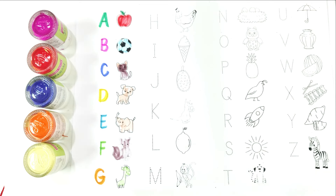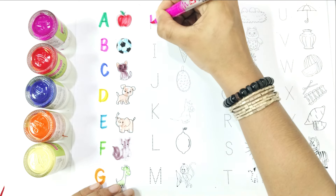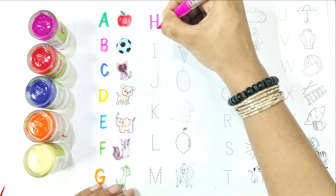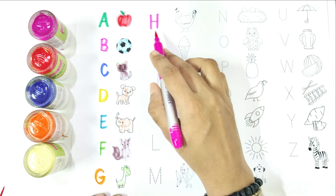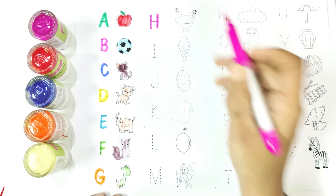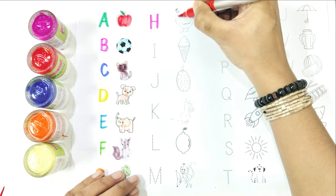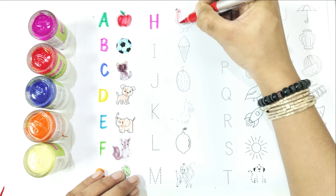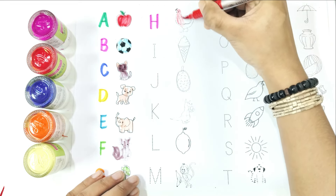Write with me. H — H is for hen. Say with me: H is for hen.